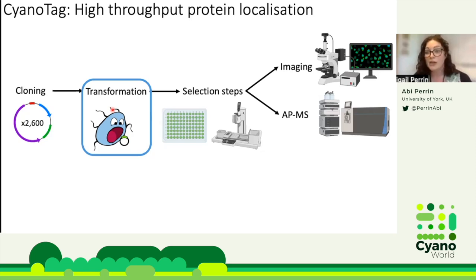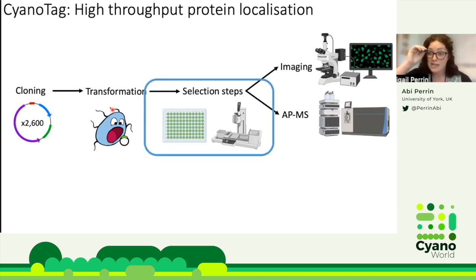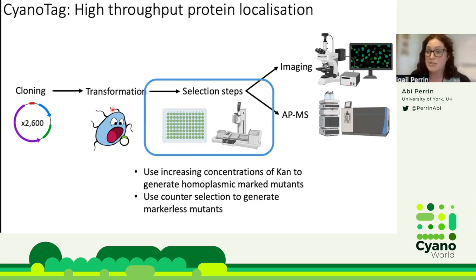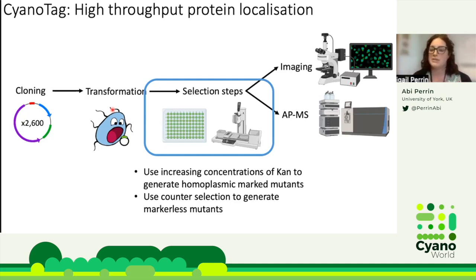The transformation step is the most straightforward — we simply incubate the plasmids we generated with our cyanobacteria overnight in the dark. The selection steps involve using increasing concentrations of kanamycin to get homoplasmic marked mutants, ensuring that every copy of the gene of interest in the genome is tagged. There can be around eight copies, which involves significant selection on kanamycin. We then use the counter-selection method to remove those markers and generate the scarlessly tagged mutants.